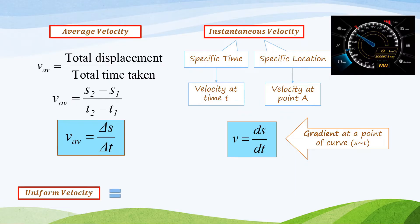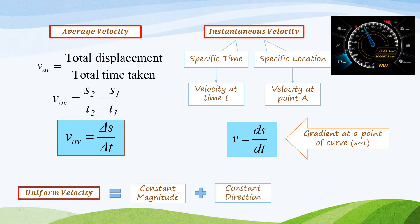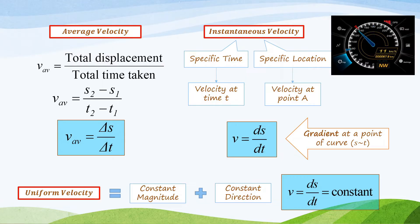Uniform velocity is velocity which has constant magnitude and constant direction. The formula is ds/dt equal to a constant. So when a car travels at uniform velocity, it does not accelerate or change direction.